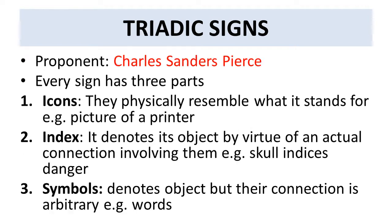The second model is the triadic model, given by Peirce. He said that every sign has three parts: icons, indexes, and symbols. An icon is something that physically represents what it stands for. For example, the printer icon on our computers physically represents the print function or the printer present in the outside world.